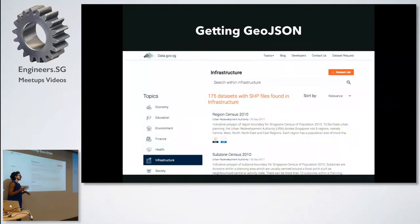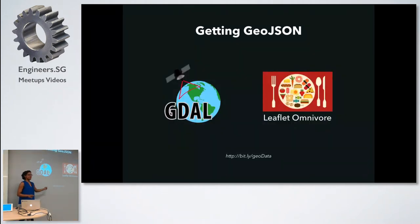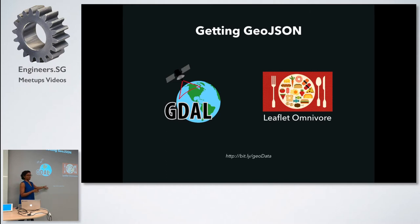Getting GeoJSON — there are various means. Singapore's open data portal, data.gov, is pretty great for it. Unfortunately a lot of the formats are in SHP (shapefiles) or KML files, so you have to do a bit of conversion. I'm throwing up a Bitly link if you're interested. GDAL is one of my go-tos — it's command line. You type in the path to your shapefile and the properties of specific elements. It allows you to convert shapefiles to GeoJSON because most web applications don't know how to interact with shapefiles.